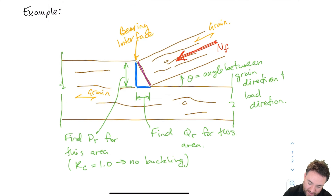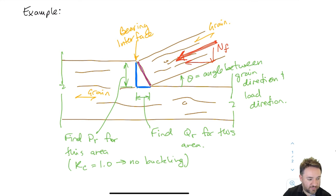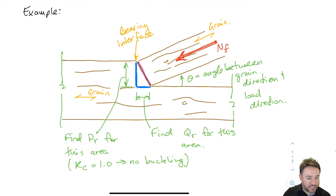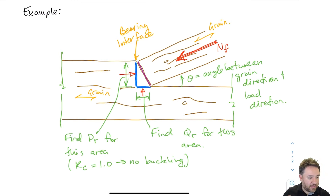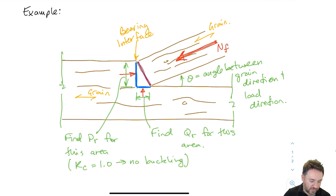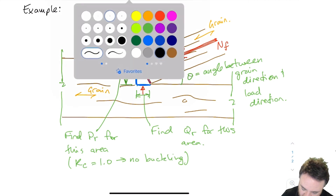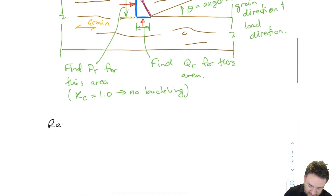So I've taken my NF and split it into two components: one perpendicular to grain and one parallel to grain. But I'm not going to compare those individual components to the individual resistances. Instead, I'm going to take my total NF and compare it against a single combined resistance. I'm calculating one resistance for each projected area and combining their geometry to come up with an effective resistance — not just adding the vectors, but using a material mechanics interaction.